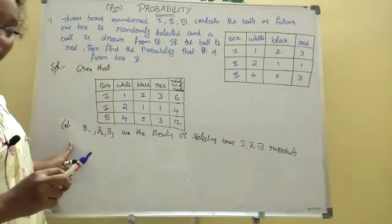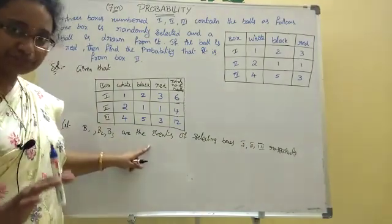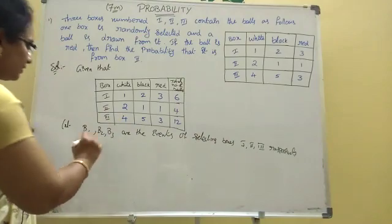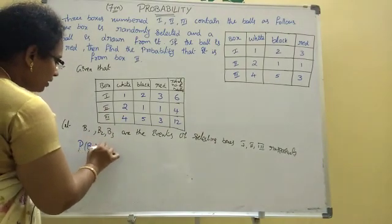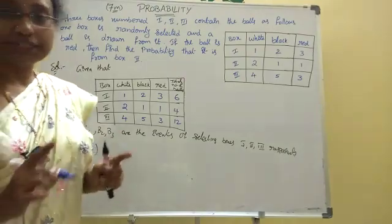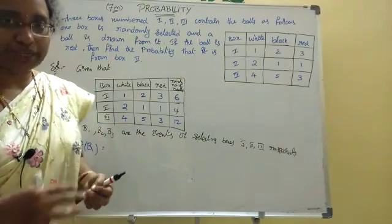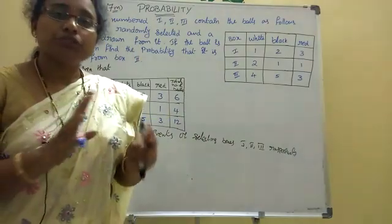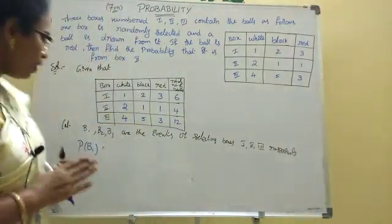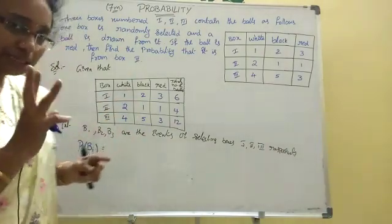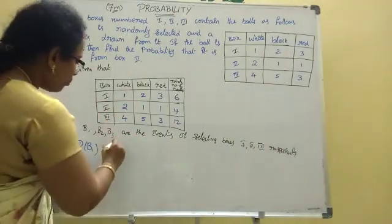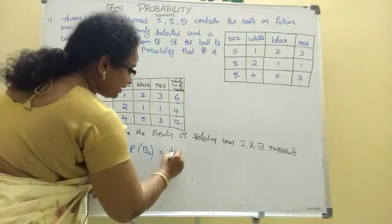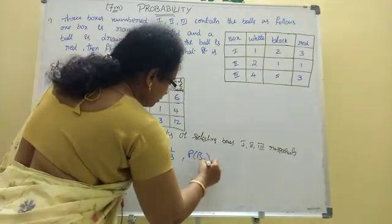Let B1, B2, B3 be the events of selecting boxes 1, 2, 3 respectively. Now, the probability of B1 is 1/3. Probability of B2 is 1/3. Probability of B3 is 1/3. Sum of probabilities: 1/3 plus 1/3 plus 1/3 equals 3/3 equals 1. That satisfies the condition that the sum of probabilities equals 1.